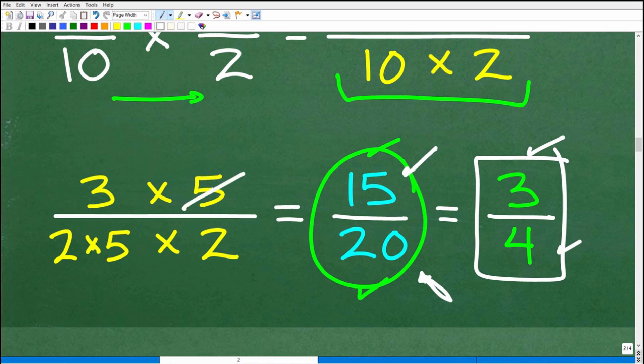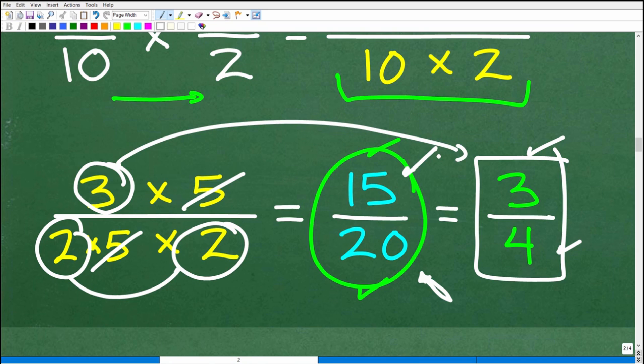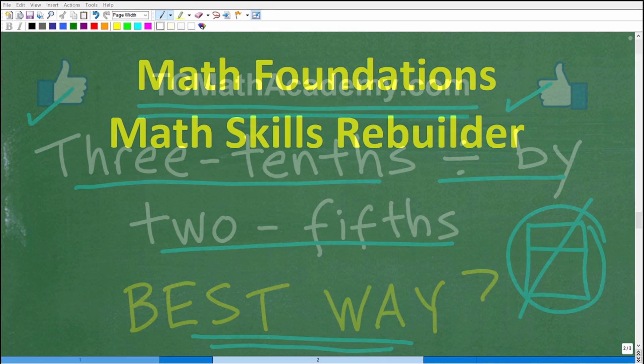Now we just cross-cancel like factors one for one. OK, so if you see a 5 up here in the numerator, you look down in the denominator. Oh, I got a 5. We could cross-cancel that. So there's no more like factors between the numerator and denominator. So that leaves us with a 3 and a 2 and a 2 down here. 2 times 2 is 4. And then just a 3 in the numerator.